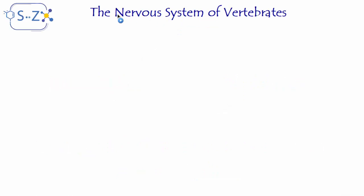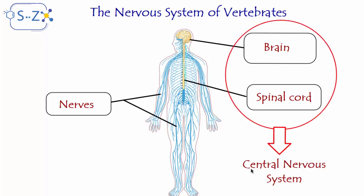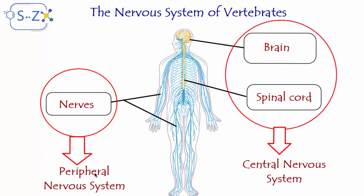Let's start with the nervous system of vertebrates, taking the example of the human being. The nervous system of humans consists first of the brain and the spinal cord, which is found inside the vertebral column — it's like a tube. The brain and the spinal cord are connected to all the body organs and parts through nerves, just like wires. If we take the brain and the spinal cord together, they form the central nervous system, which is responsible for interpretation, decision-making, and giving orders.